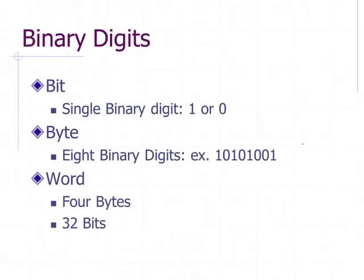As we close this lecture, I want to give three definitions. When I'm talking about a single binary digit, I'm talking about a bit. When I'm talking about eight binary digits, I'm talking about a byte. When I'm talking about 32 bits, I'm talking about a word, which is four bytes. That ends our lecture on the information layer.